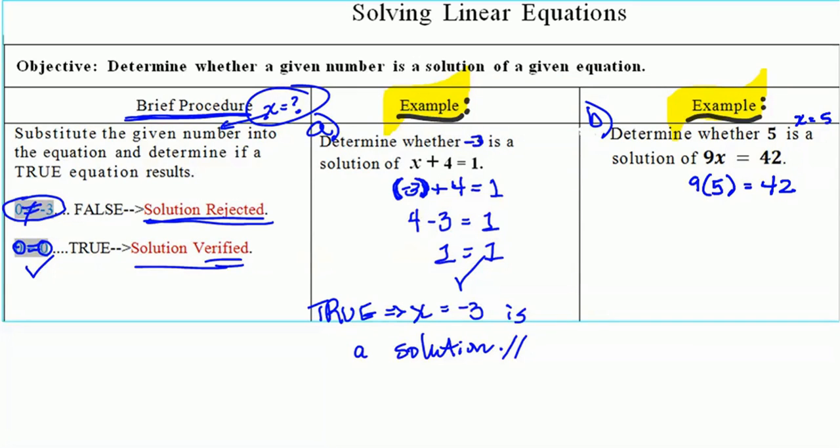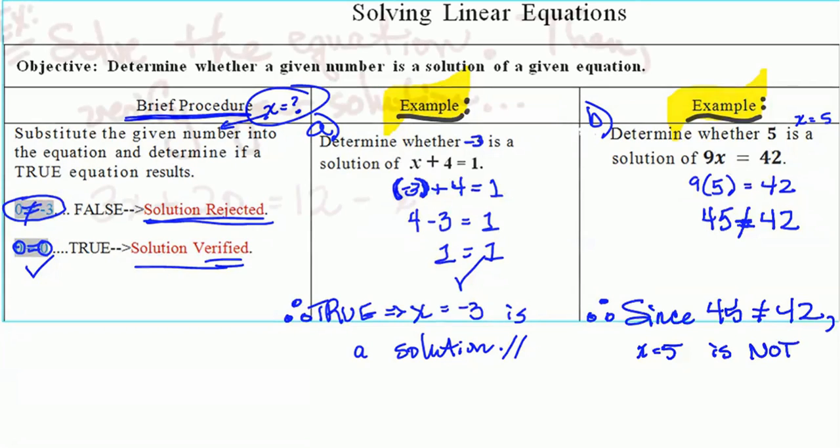Just see what you get. 9 times 5 is 45. 45 is equal to 42. Is this true or false? This is very false, we're about three off there. Therefore, since 45 is not equal to 42, then x equal to 5 is not a solution.